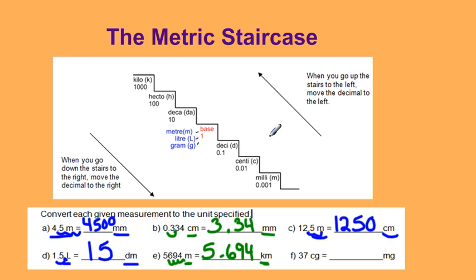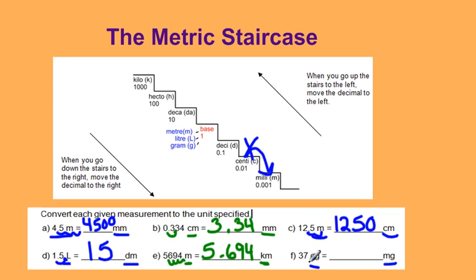The last one: I'm converting from centigrams to milligrams. Centigram is my stair, going down one to milli. Because I'm going down the stair, I'm moving my decimal one place to the right — I can assume it's right after the 37. So now I'll be at 370 milligrams.